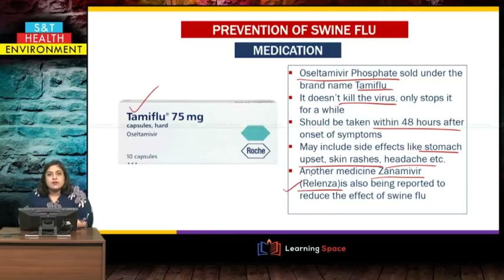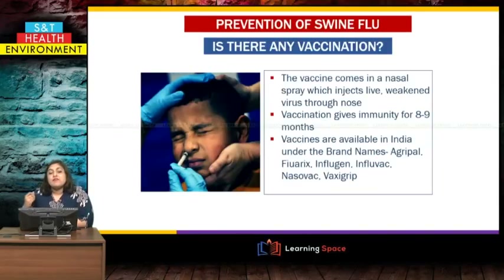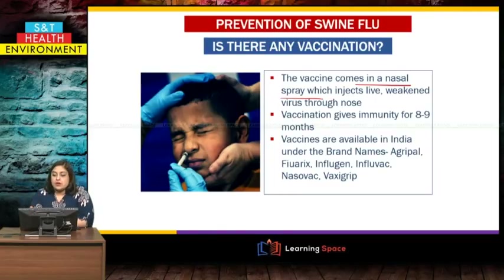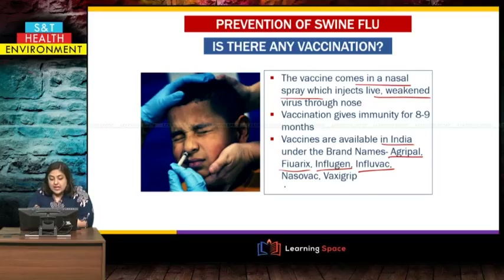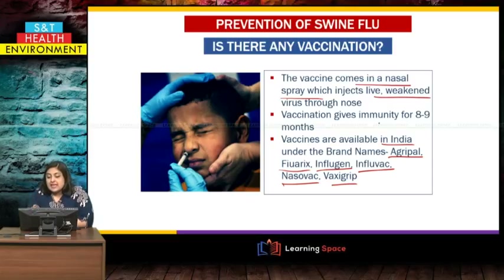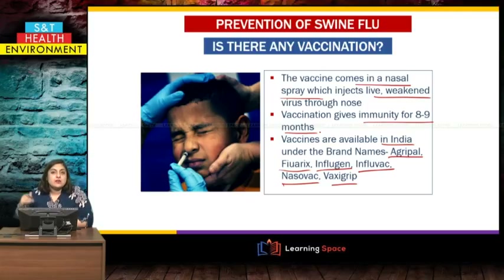There is also an immune response through vaccination. The vaccination is in nasal spray form, which injects live or weakened live virus directly through the nose. Vaccines are available in India under the brand names Agrippal, Furix, Influgen, Influvac, Nasovac, and Vaxigrip. Remember, vaccines give immunity only for about 8 to 9 months within a year — after that, their effect reduces and the vaccine has to be reboosted.